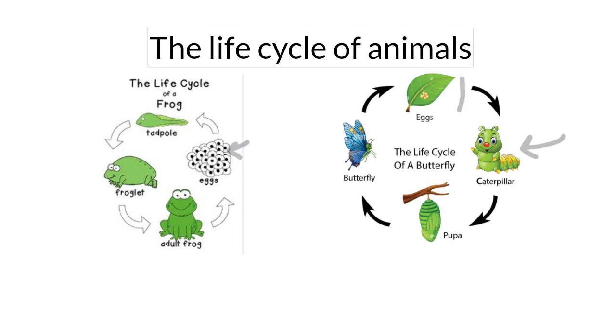First thing, we have eggs. The eggs grow and become a caterpillar. Then the caterpillar becomes a pupa. Then the pupa turns into a butterfly. And we call this the life cycle of a butterfly.